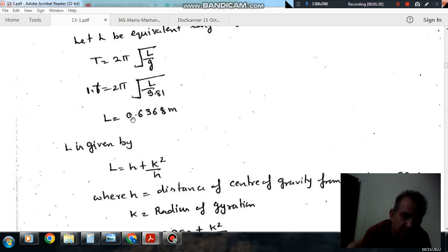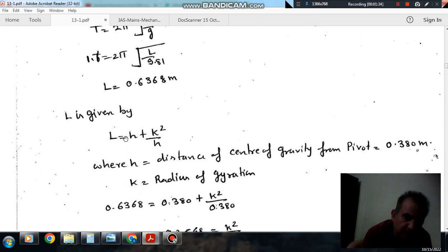Equivalent length means we are assuming that the pendulum is massless and one mass is created at the pivot and other mass is created at this length. Now, it is given that the center of gravity of the pendulum, the distance of the center of the pendulum from the pivot is 0.380 meters.